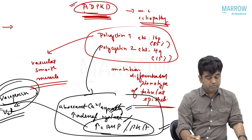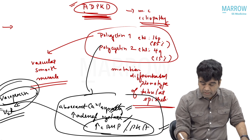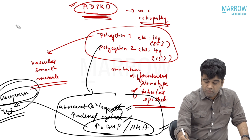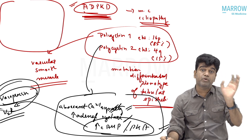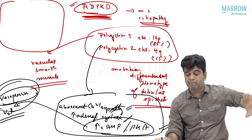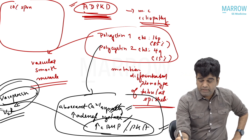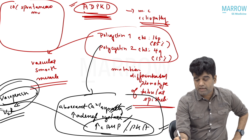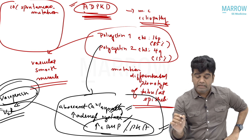Inside this basic intro, what are the updates and new likely questions that can come? The new likely questions include: you need not have parents with ADPKD to 100% get ADPKD, because only 90% is genetic and 10% is due to spontaneous mutation. So 90% is genetic, 10% is due to spontaneous mutation — that is one difference to keep in mind.